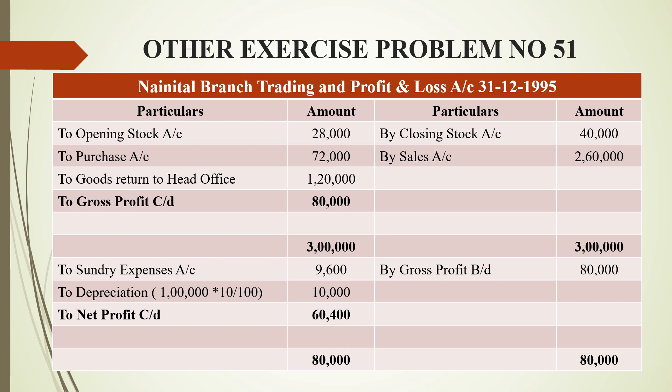The gross profit of 80,000 is brought down to the branch profit and loss account on the credit side. On the debit side, sundry expenses are 9,600 and depreciation on assets worth 1,10,000 at 10% is 10,000. The balancing figure gives a net profit of 60,400 rupees, with a grand total of 80,000 on both sides.